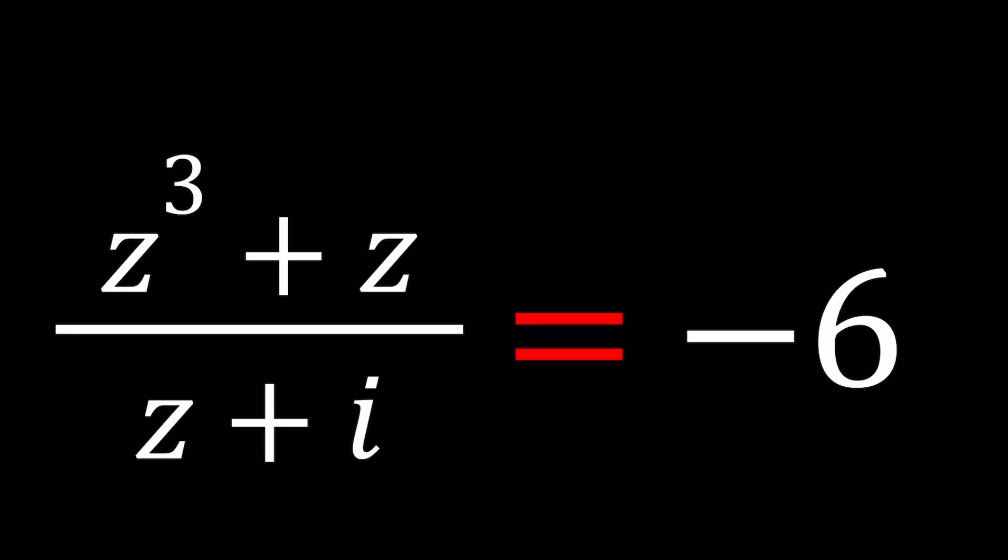Hello everyone. Welcome to A plus B I. This channel is all about complex numbers and in this video we're going to be solving a homemade rational complex equation. We have Z cubed plus Z, all of that divided by Z plus I, and that is equal to negative 6. And we're going to be solving for Z values.